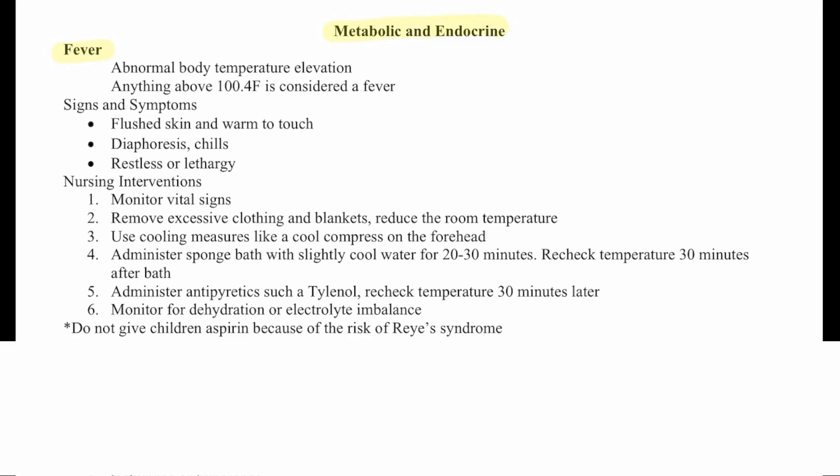Nursing interventions for fever include monitoring vital signs, removing excessive clothing and blankets, reducing the room temperature, and using cooling measures like a cool compress on the forehead. We can administer a sponge bath with slightly cool water for 20 to 30 minutes, then recheck the temperature 30 minutes after the bath. Administer antipyretics like Tylenol, recheck the temperature 30 minutes later, and monitor for dehydration and electrolyte imbalance. It's important to note: do not give children aspirin because of the risk of Reye's syndrome, which we'll discuss later.